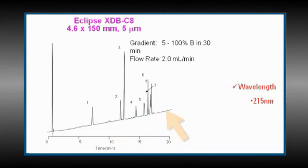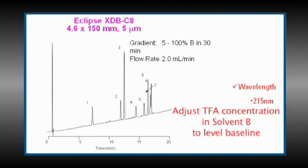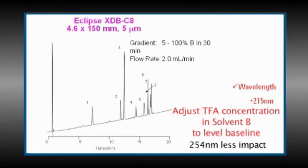If we adjust the TFA concentration in B to a lower amount, such as 0.09%, we can level the baseline and fix the problem. Using a higher wavelength, such as 254 nanometers, can fix the problem too, but that may not always be possible.